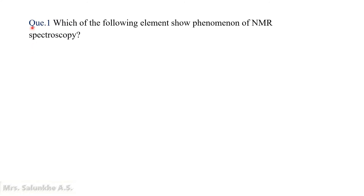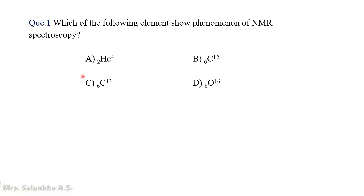Question 1: Which of the following elements show the phenomenon of NMR spectroscopy? In case of NMR spectroscopy, the nuclei of atoms which are magnetic in nature show the phenomenon of NMR spectroscopy, while those which are non-magnetic in nature do not show the phenomenon of NMR spectroscopy.